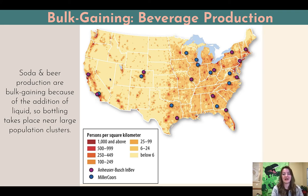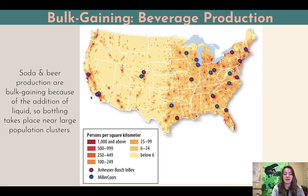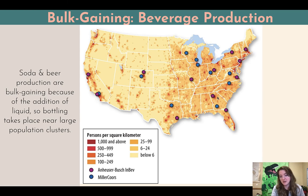Here we're looking at a choropleth map showing persons per square kilometer — the arithmetic density, where people are located — and which companies are where. In this case it's beer: Anheuser-Busch or Miller Coors. Purple is Anheuser-Busch, blue is Miller Coors. Notice that they are located near the highest population centers.